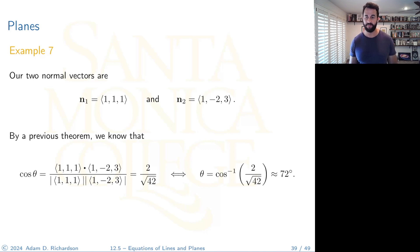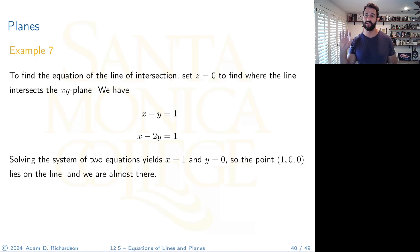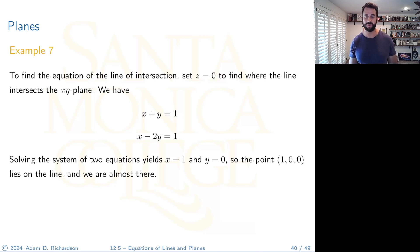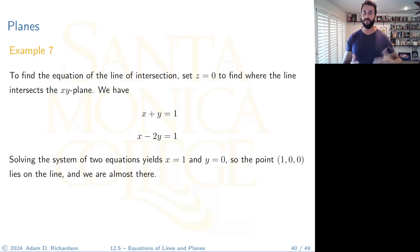For the line of intersection, we need a point and a direction vector. A good strategy is to set z = 0 arbitrarily and find where the line intercepts the XY plane — this gives us a point on the line. Then we can solve the resulting system of two equations in x and y to find that specific point.